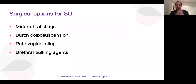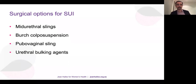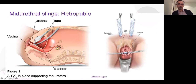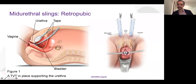Surgical management of stress urinary incontinence has four conventional options: mid-urethral sling, Burch colposuspension, pubovaginal sling, and urethral bulking agents. The retropubic mid-urethral sling is inserted through the vagina in the sub-urethral area, going through the retropubic space between the pubic bone and bladder, creating a U-shaped support. Whenever you cough or sneeze and the bladder neck wants to descend, the sling stops it and blocks the bladder outlet. The transobturator sling goes along the vaginal sidewalls and exits in the obturator membrane on each side.